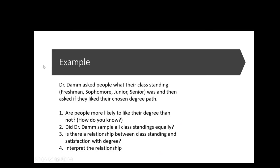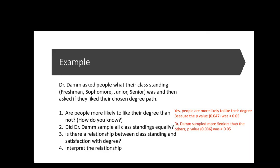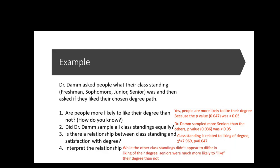Now let's put all the numbers into our responses. Are people more likely to like their degree? Yes — the p-value of 0.047 is less than 0.05. Did Dr. Dam sample all class standings equally? No — she sampled more seniors, p-value 0.036. Is there a relationship between class standing and satisfaction with degree? Yes — chi-square equals 7.969, p-value 0.047. Seniors were much more likely to like their degree than not, while other class standings did not differ in degree liking.